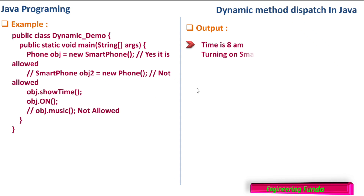When compiled and executed, it first prints 'This is 8 AM' by calling showTime from the Phone class. When calling the 'on' method, it prints 'Turning on smartphone' — this is the concept of dynamic method dispatch. At compile time, the compiler sees a call to 'on' and knows Phone has an 'on' method, so it understands it may call from Phone. But at runtime, it executes the 'on' method from the Smartphone class — this dispatch happens at runtime.